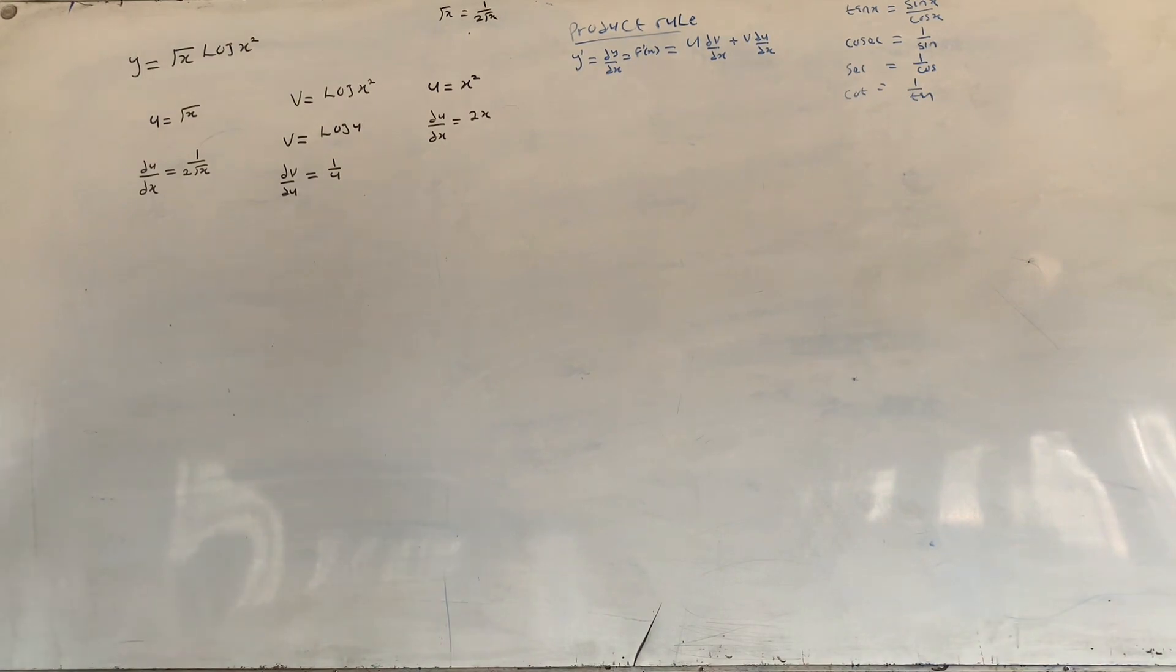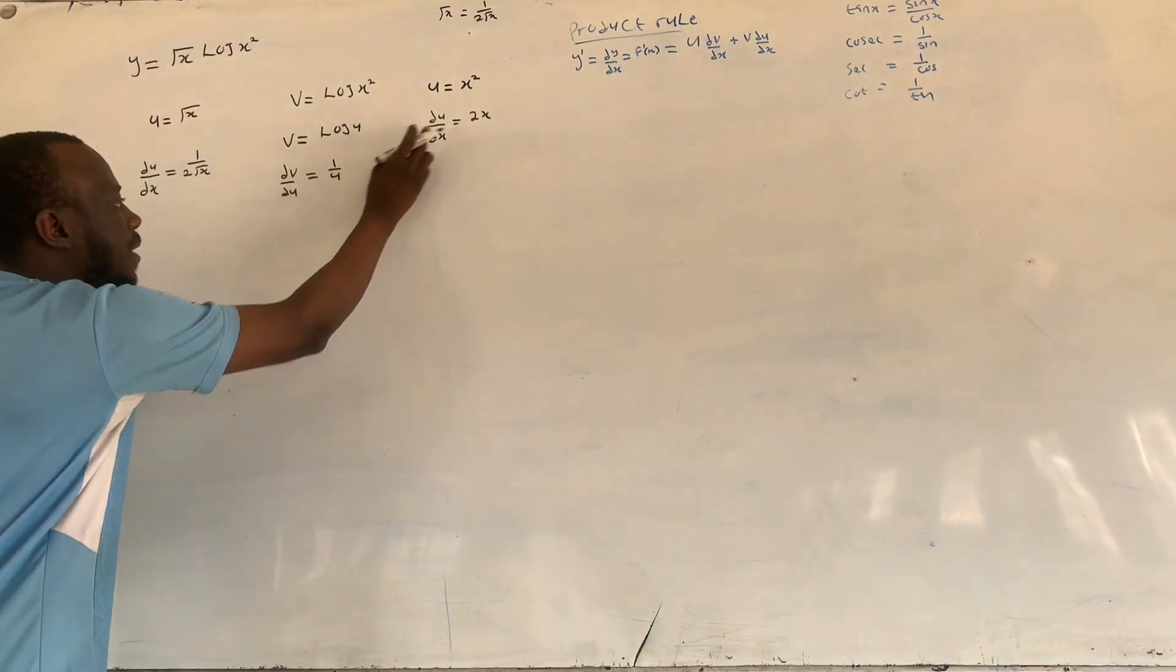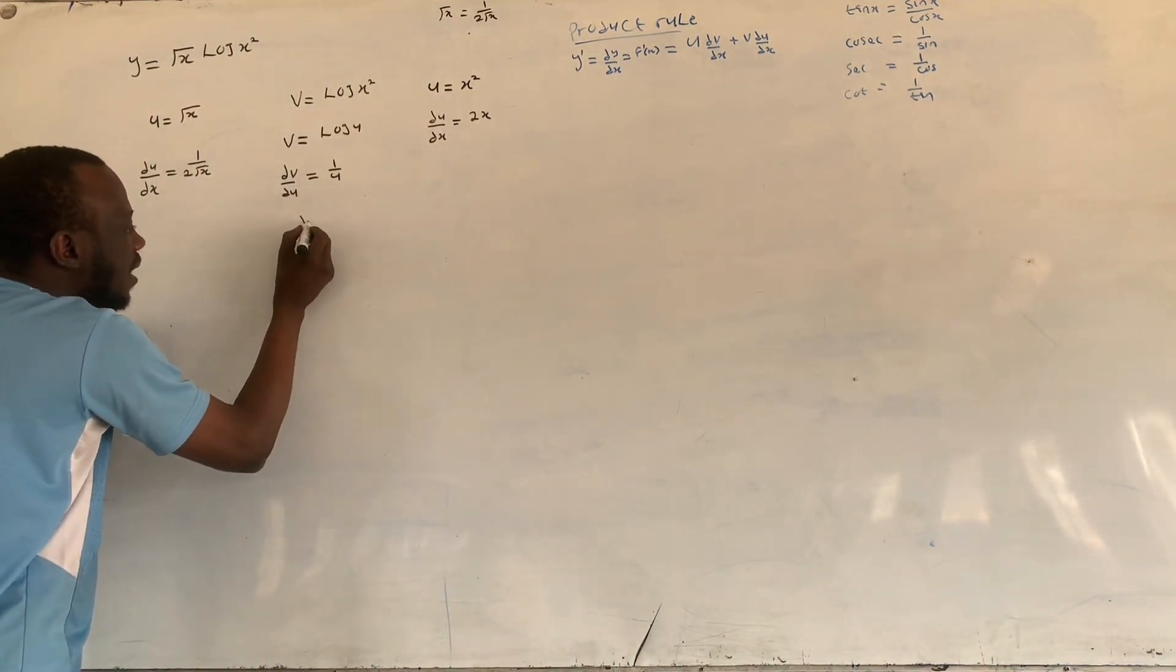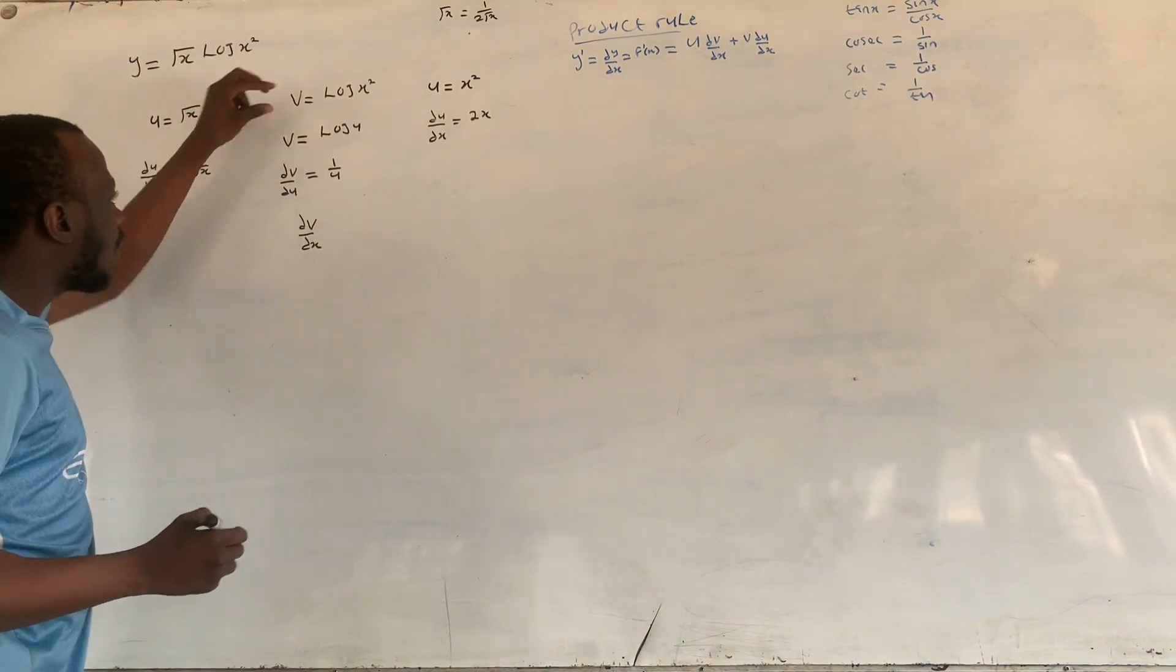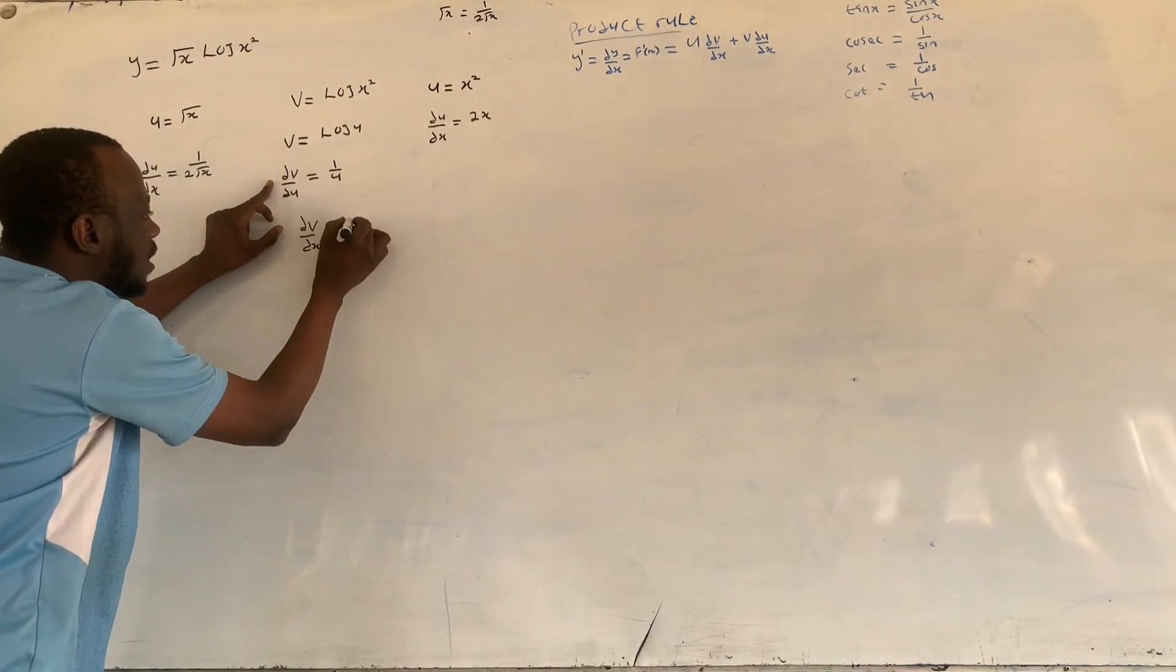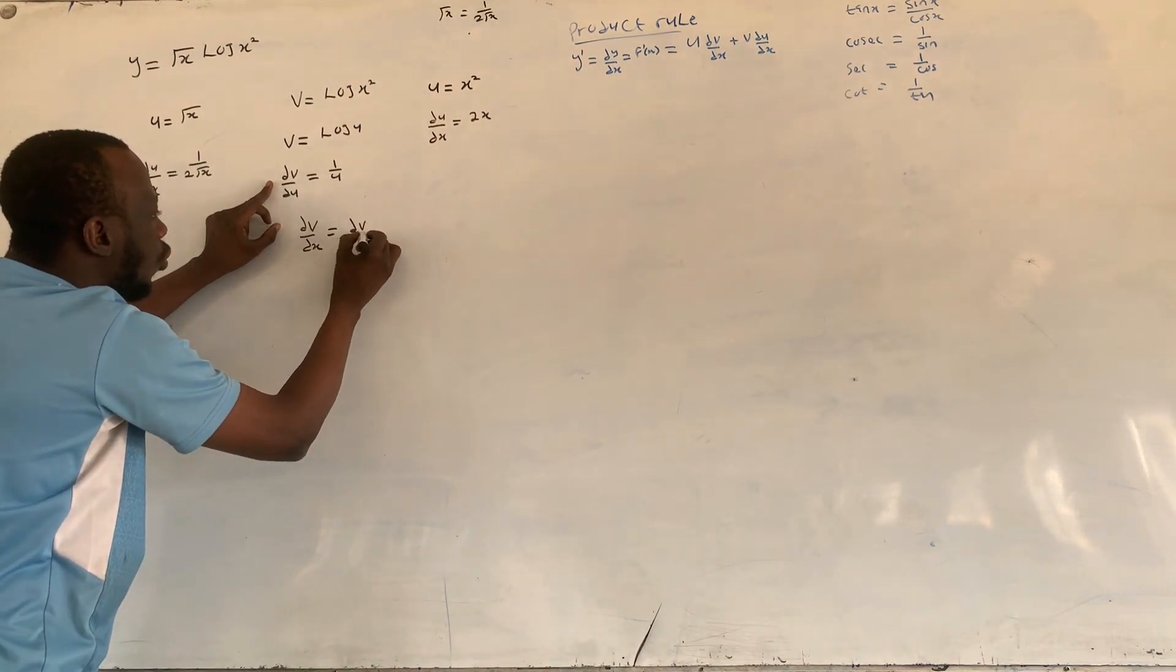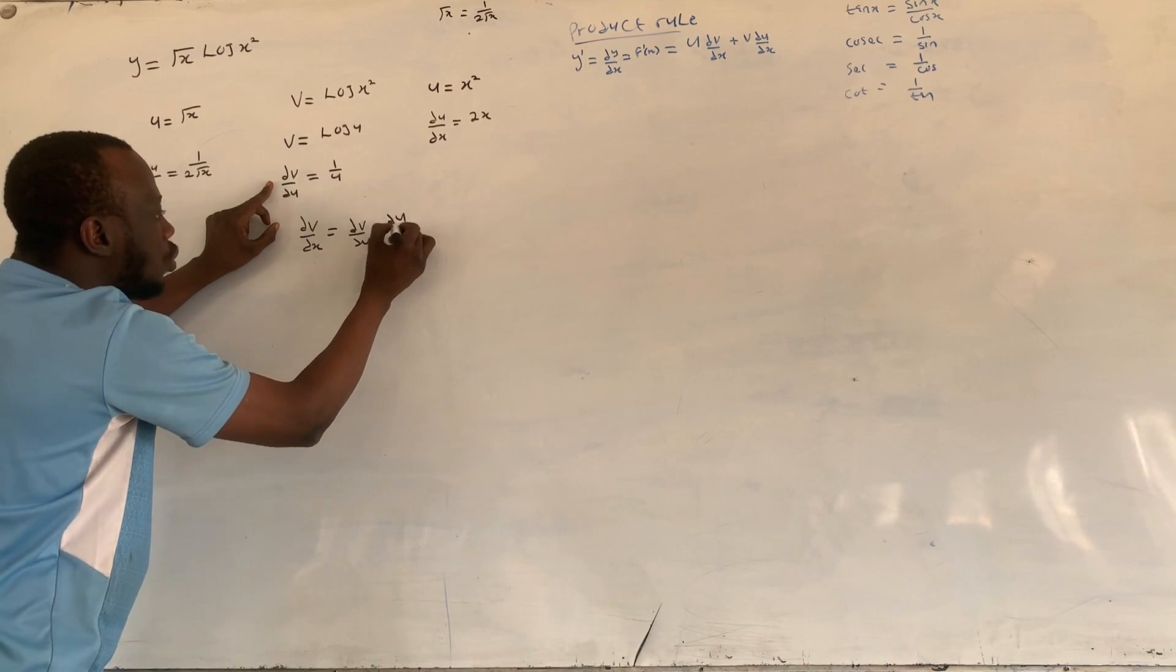So now remember that the rule states that we multiply the derivatives together. So we are trying to obtain dv over dx. It's equivalent to dv over du times du over dx. Remember that chain rule states that.